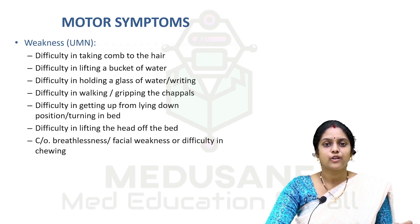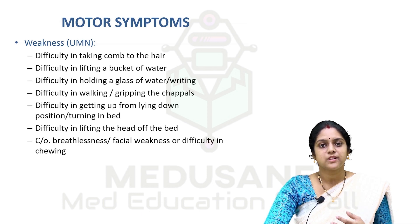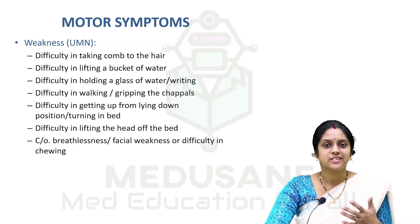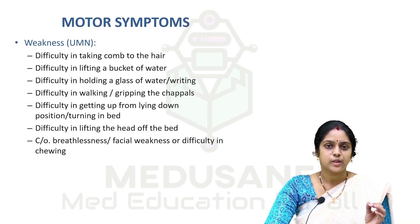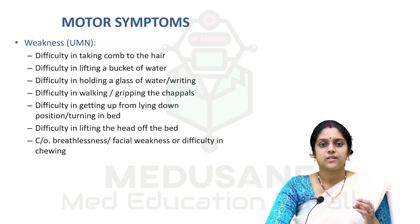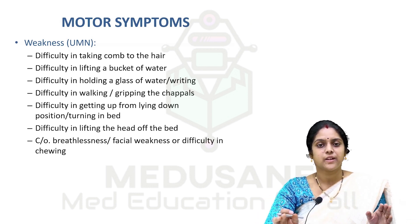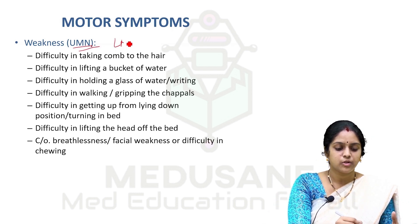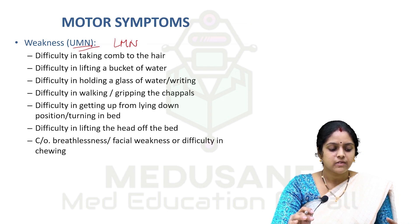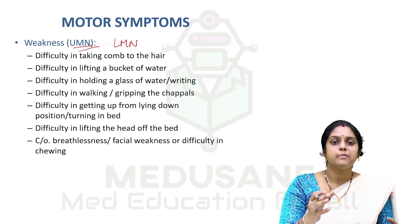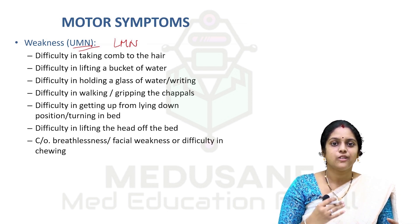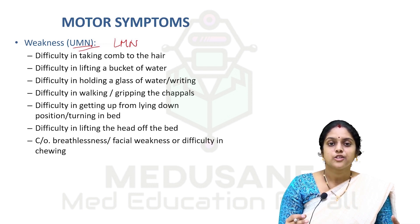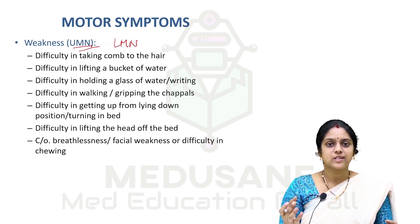Next we move on to the history taking of the motor system. The most common motor symptom and the most common symptom in the cranial nerve history taking will be weakness of the limbs. This weakness we have to initially differentiate whether it is an upper motor neuron complaint or a lower motor neuron complaint. The symptoms will be based on whether it is an upper motor neuron lesion or a lower motor neuron lesion, so we need to keep in mind the differences between the two.